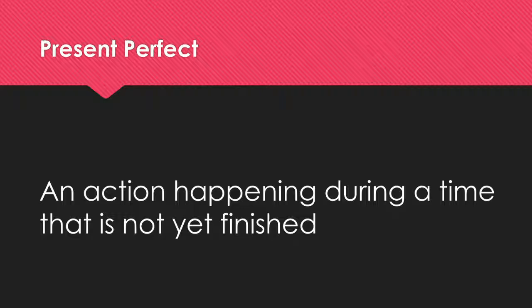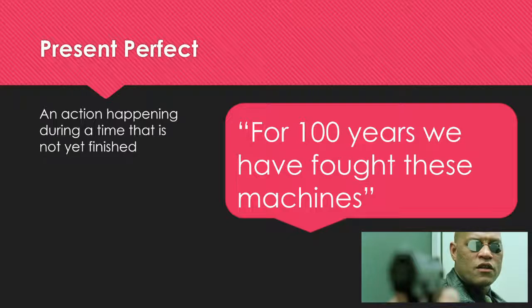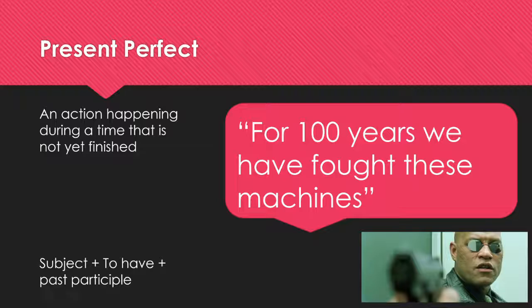We use the present perfect to talk about actions performed during a period that has not yet finished: 'For 100 years we have fought these machines.' Subject 'we' plus 'to have' plus past participle. Note that the time specification 'for 100 years' can begin or end the sentence — for example, 'We have fought these machines for 100 years.' Using the same form, we could also say: 'This week I have eaten pizza three times.'